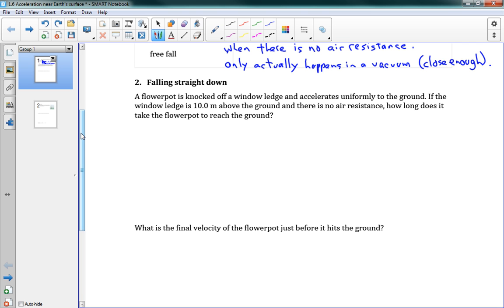I'll draw a little picture of the problem here. We have a window with a flower pot sitting on it with some little flowers here. And it drops off the ledge, falling towards the ground. We're going to say that the ground is 10 meters away. And the question is, how long does it take before it hits the ground?